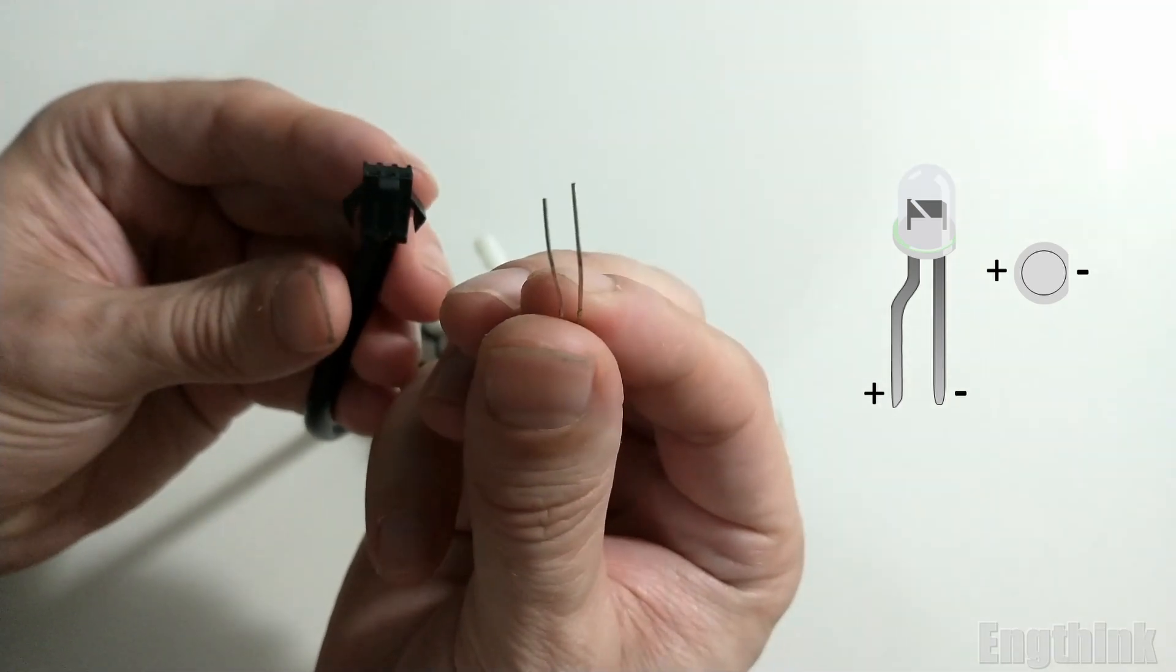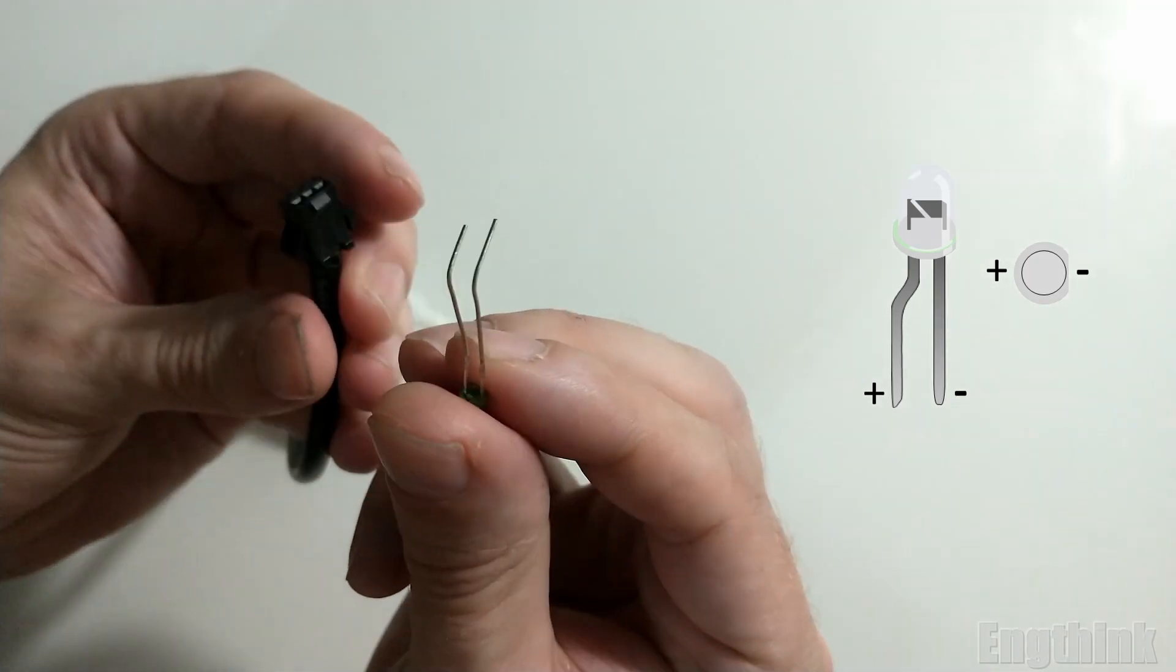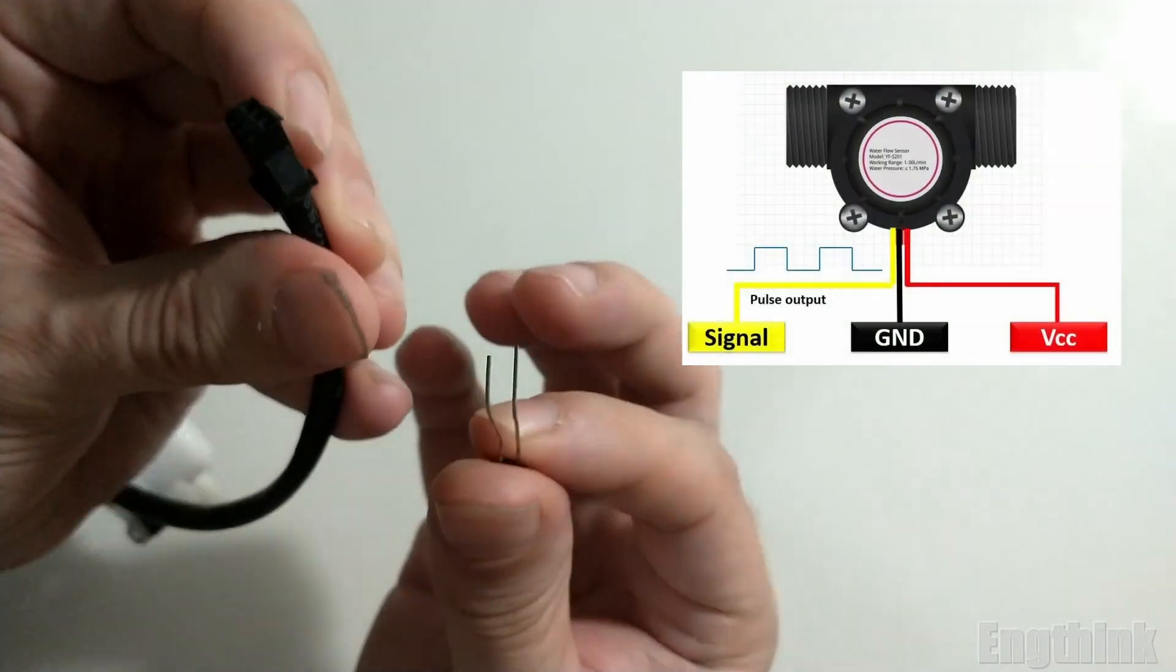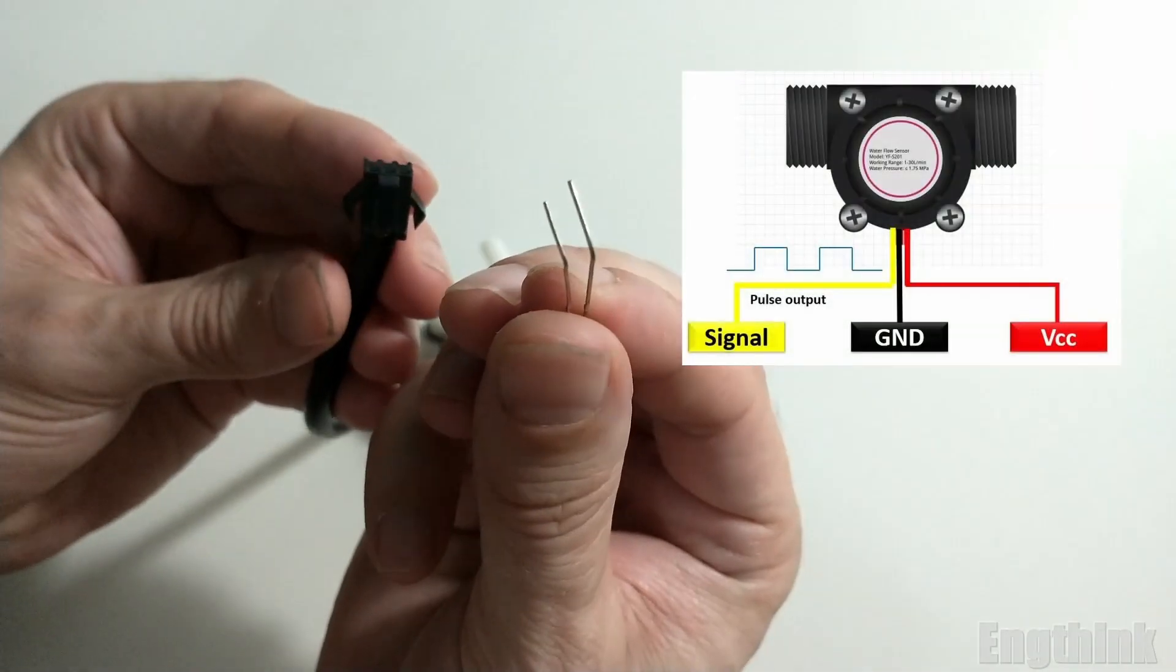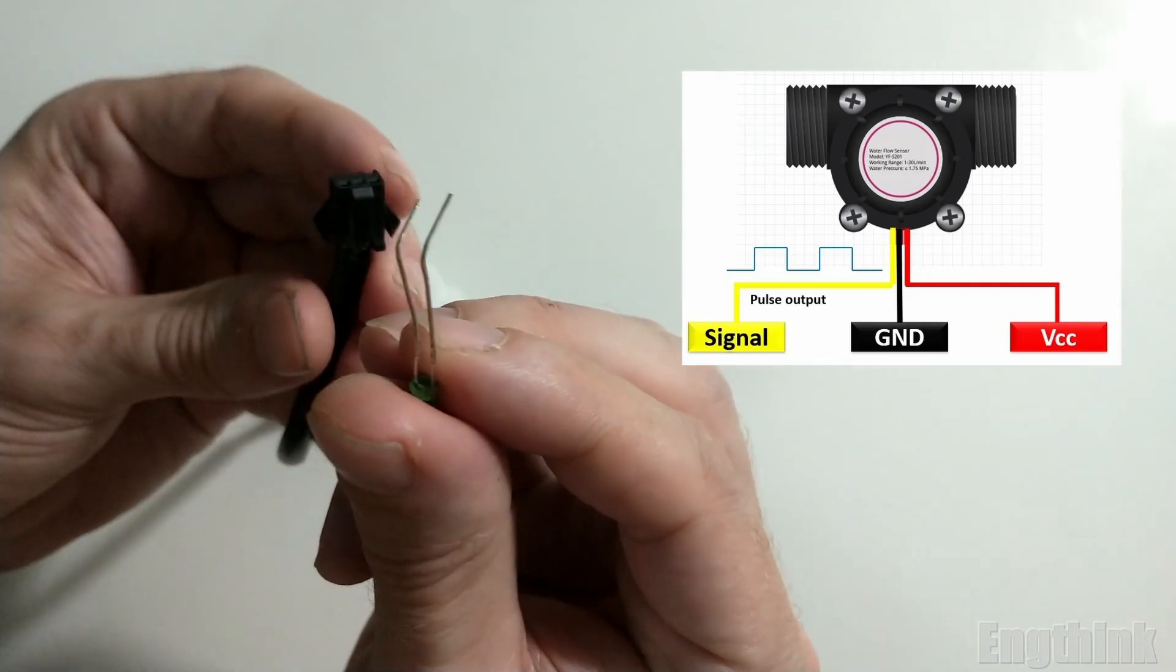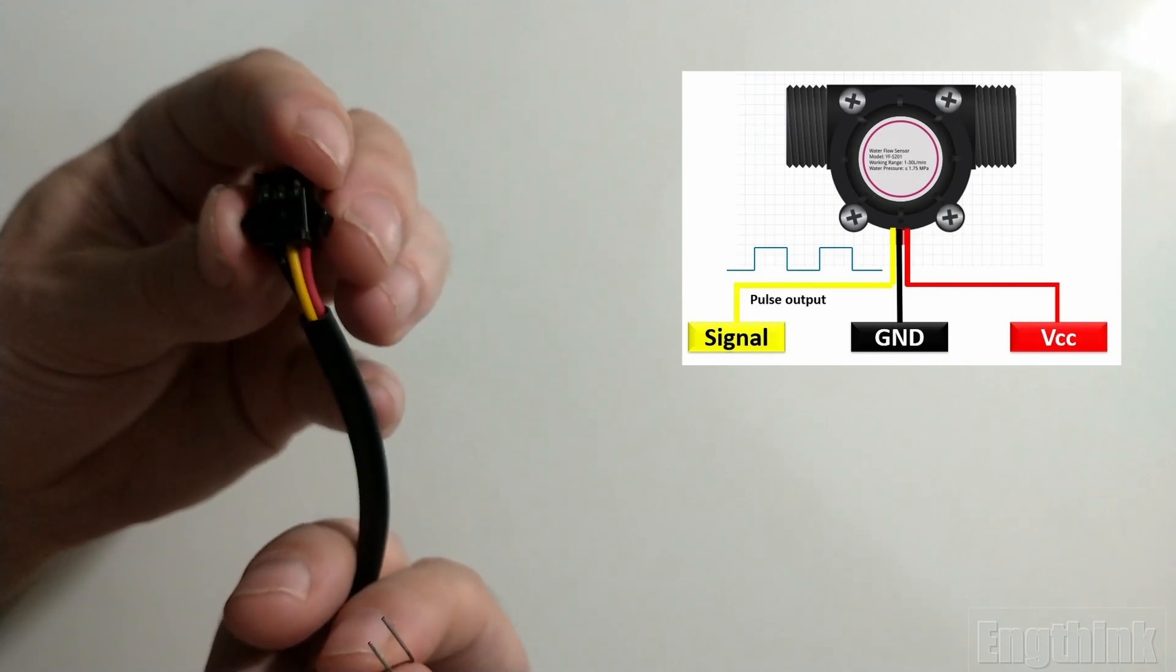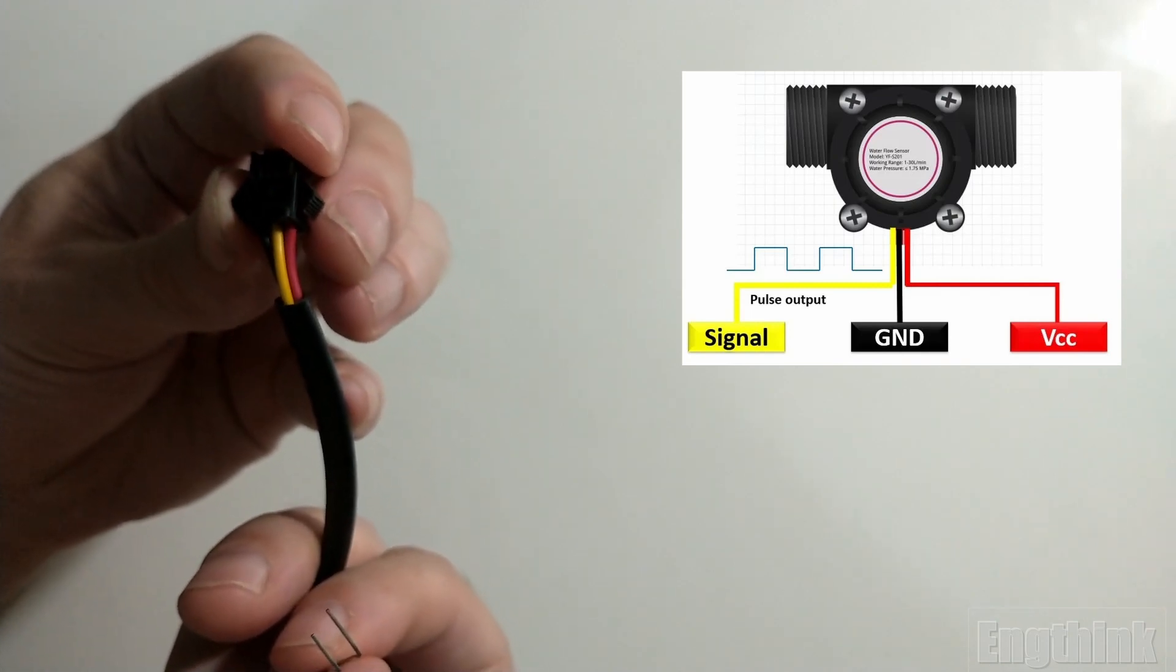Let's review the wires of the flow sensor. We have the red one that is positive, the yellow one that is the output signal for the pulses, and finally the black one that is the negative wire.